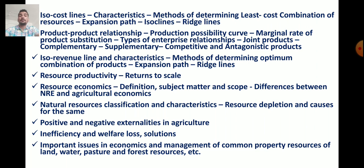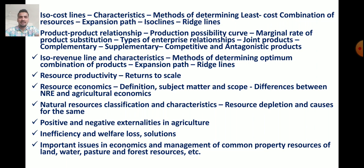The next topic is Product-Product Relationship: what is the Production Possibility Curve, Marginal Rate of Product Substitution, and Types of Enterprise Relationship — Joint Products, Complementary Products, Supplementary Products, Competitive, and Antagonistic Products. Then what is the Iso-Revenue Line, its characteristics, Methods of Determining Optimum Combination of Products, Expansion Path, and Ridge Line.